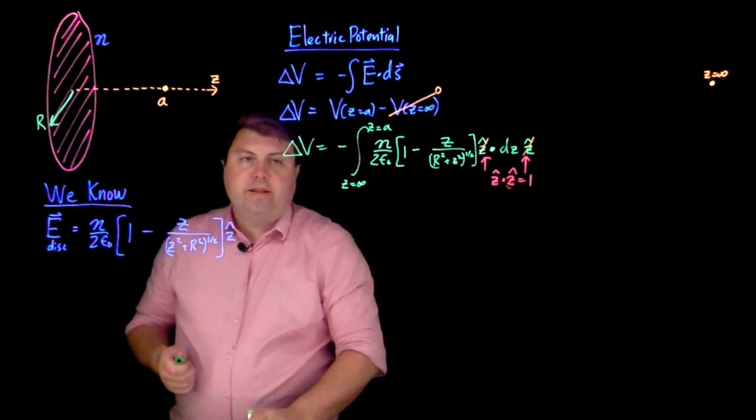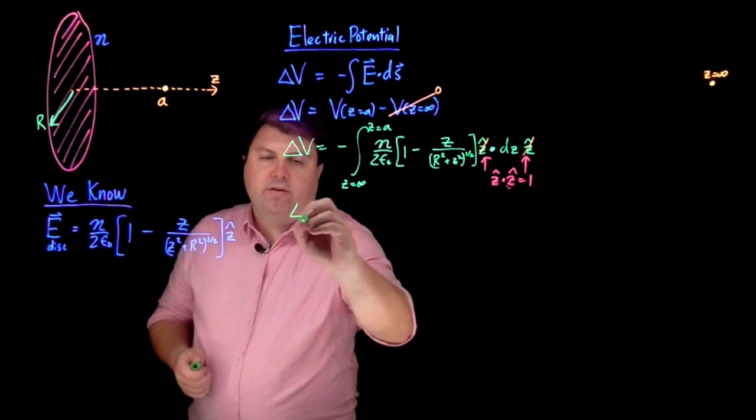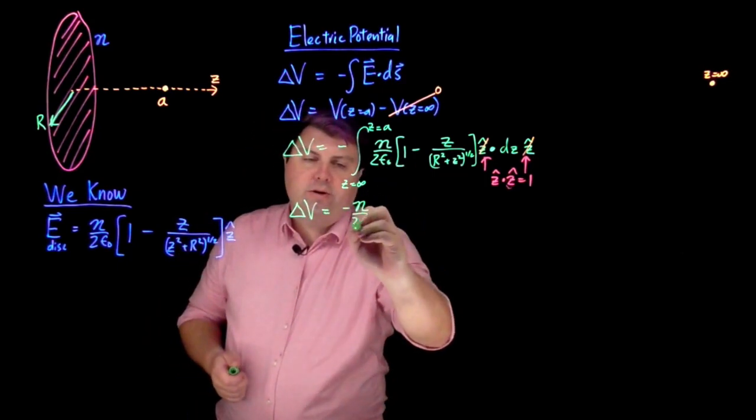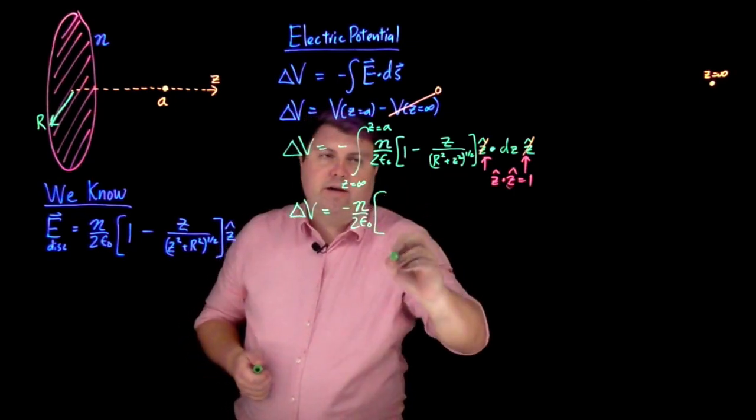So looking at it then, my integral, I can pull the negative eta over two epsilon not out entirely of the integral.